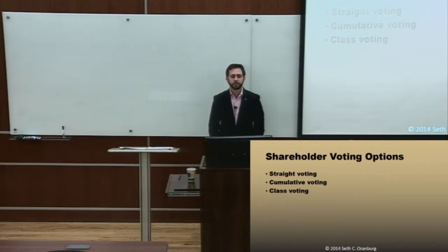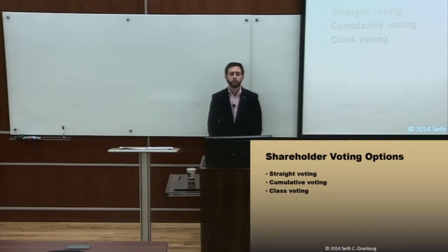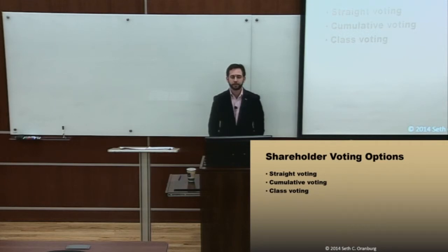Class voting means there can be different types of stock — common stock and preferred stock. Preferred stock can come in different series: Series A, Series B. Class voting would say that a majority of common would have to approve something and a majority of preferred, as opposed to simply all shares together approving something. So if you have 1 million common and 10 million preferred, without class voting the preferred could dominate the common. With class voting, the common would essentially have a veto right. With series voting, Series A — let's say there's 1 million Series A and 10 million Series B — the A would get a veto right, and you would still need 500,001 Series A shares to approve a transaction through series voting.